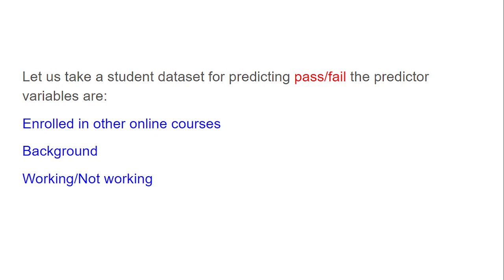Now let us take the student dataset taken from Kaggle, used for predicting pass or fail. The predictor variables are: whether the student enrolled in other online courses — if yes, he cannot spend more time for this course so there is a chance he may fail. The student background — mathematics, computer science, or other — also affects pass/fail. And whether the candidate is working or not working — working means less time for the course, not working means he is dedicatedly available.